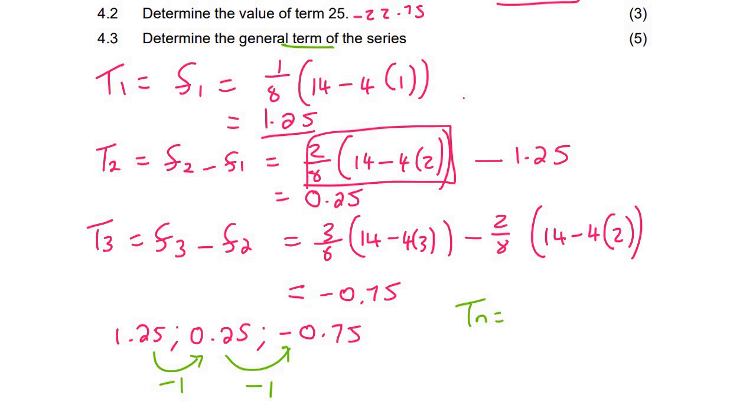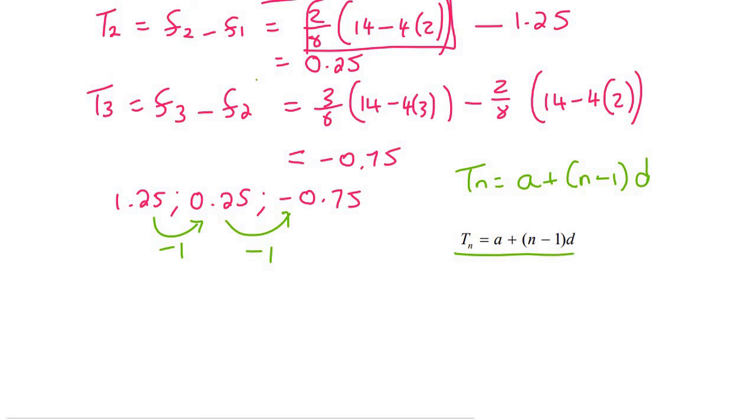So they said determine the general term. So that's the Tn formula, which we know for an arithmetic is a plus n minus one times d. And so there I just went and got the formula anyways, just so you can remember that. And so to work out the general term, you can just take a, which is 1.25 plus n minus one. We don't know what n is. And then the common difference is minus one.